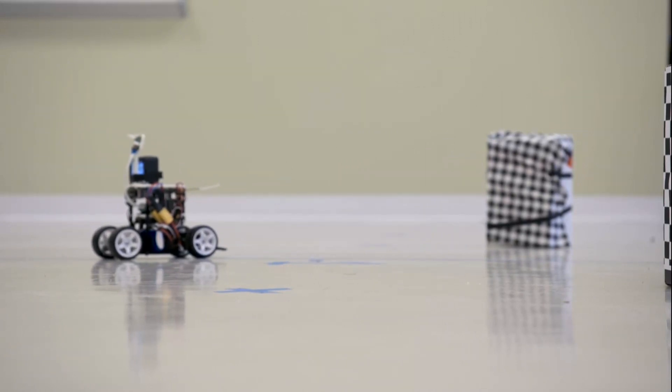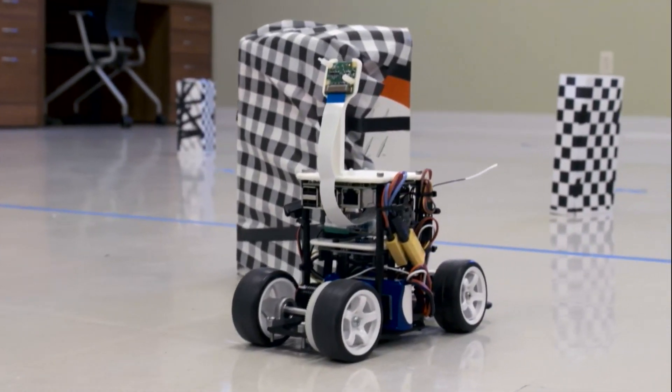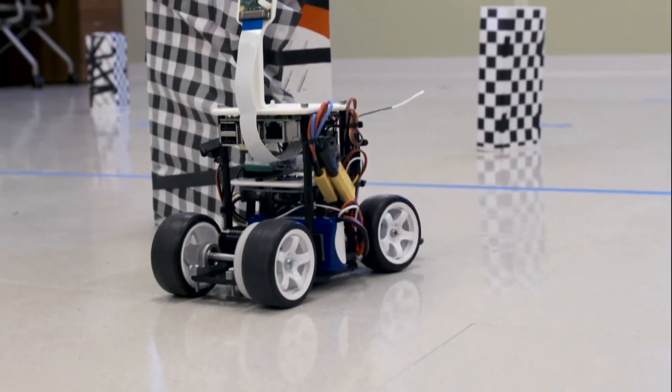It's processing the visual information it sees and then trying to make a decision. You can see it's kind of deciding left or right by moving a tiny little amount. It's trying to pick up the visual cues through the optical flow algorithm and decide which direction it should go.